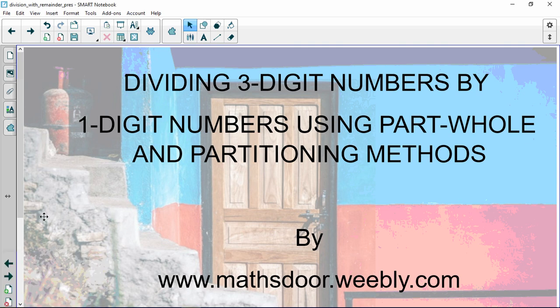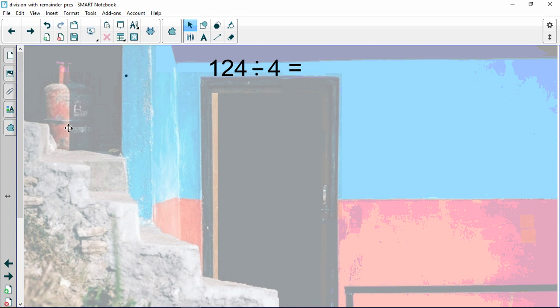Welcome back. We're going to do some dividing three-digit numbers by one-digit numbers using two different methods: part-whole and partition methods. In the past we've used a visual method to show our division using counters.